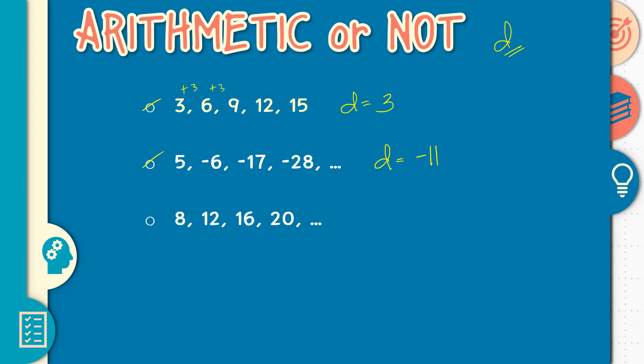Next: 8, 12, 16, 20. Yes, obviously. And our common difference is 4. Kasi plus 4 ng plus 4.